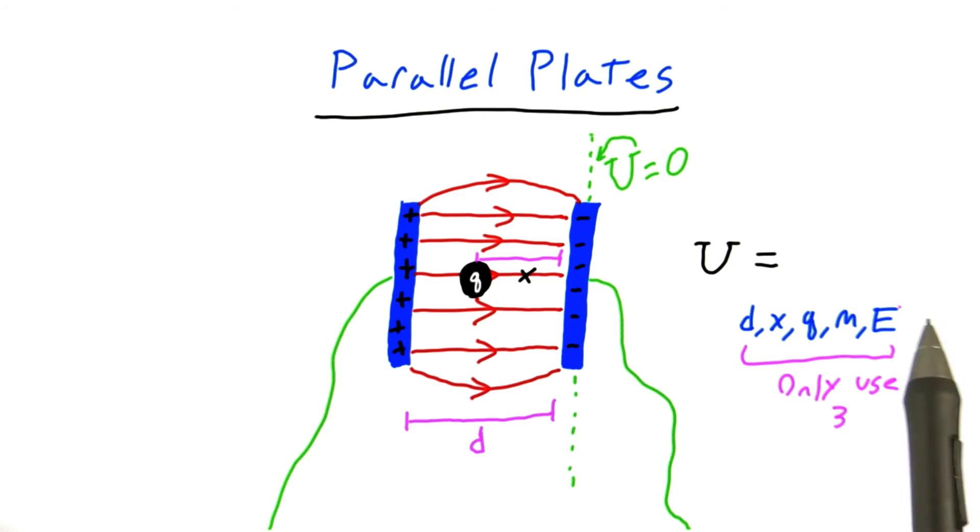Now can you tell me what's the formula for finding the potential energy of this particle in this electric field? In your answer, you can use the distance between the two plates d, the distance the particle is away from the negative plate x, the charge of the particle q,